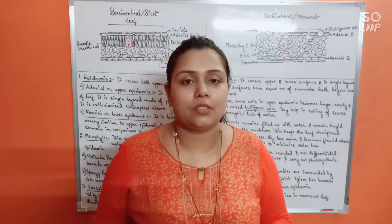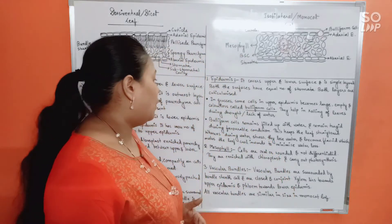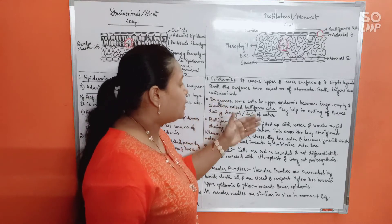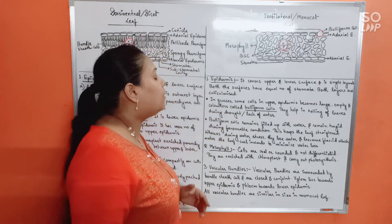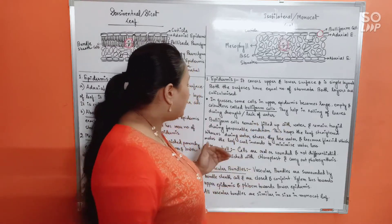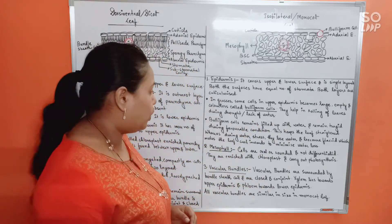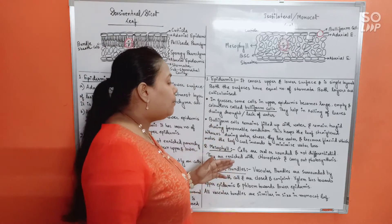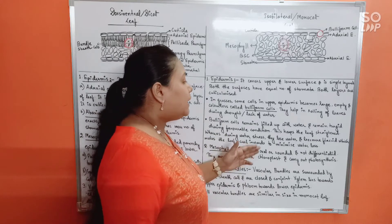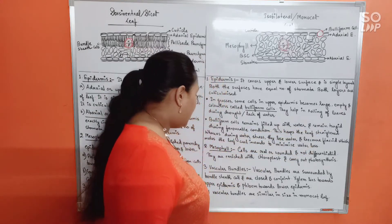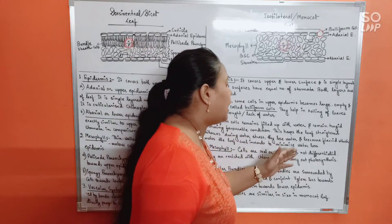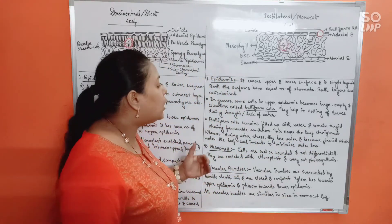Reading it out: in grasses, some cells in the upper epidermis become large, empty, and colorless — called buliform cells — helping in the rolling of leaves during drought or lack of water. During favorable conditions, buliform cells remain filled with water and turgid, keeping leaves straightened. During water stress, they lose water and become flaccid, making the leaf curl inward to minimize water loss.